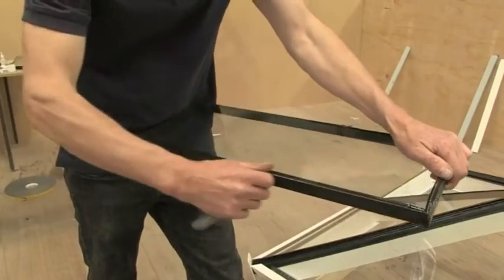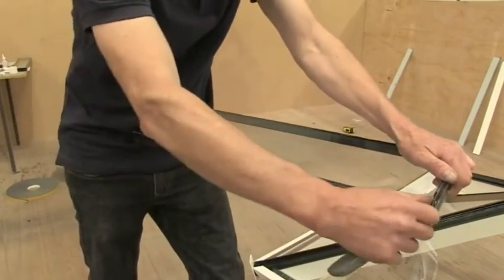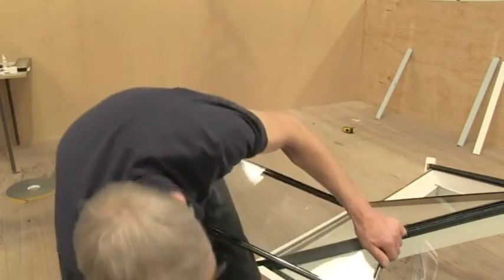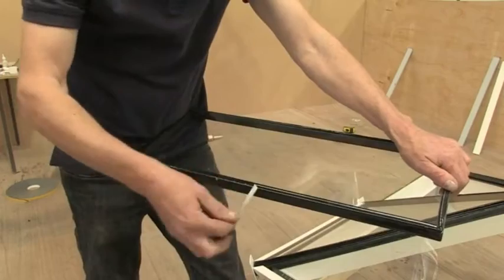When fitting roof vents, always remove foiled or plastic tape from the surface of the unit before sealing. Remember to clear both sides and always use the correct sealant.